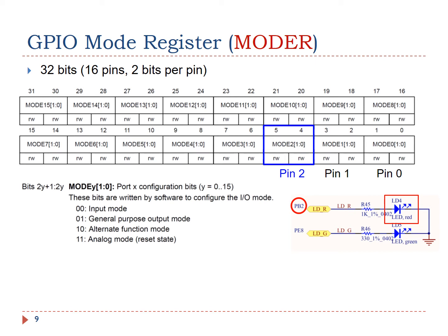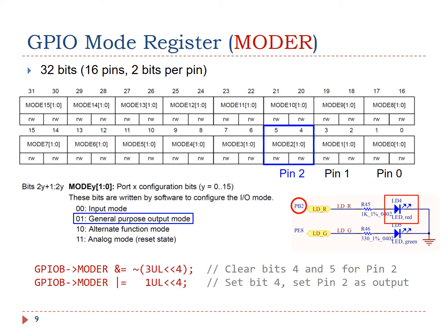In this example, pin PB2 will be used as output to turn on the red LED. Therefore, we need to set bit 5 and bit 4 to 0 and 1, respectively. Here is the C code. First, we clear bit 4 and 5. Then we set bit 4 by using bitwise OR.